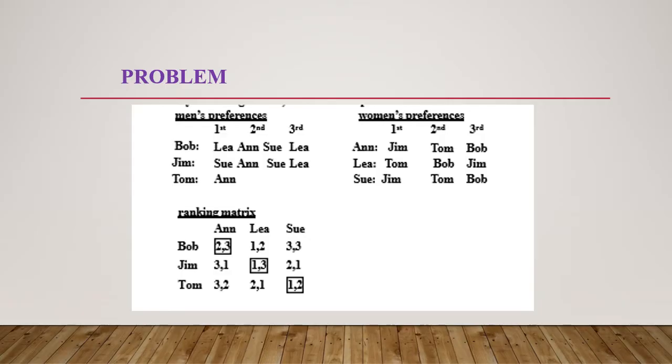So I have taken a problem. Here they have given a set of men and women. Bob, Jim and Tom are the men, and Ann, Lee and Sue are the women, and their preference list has been given.